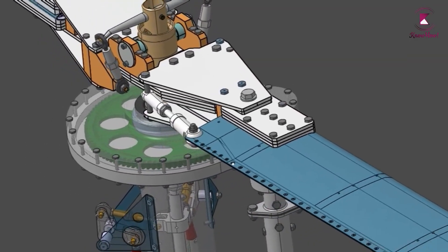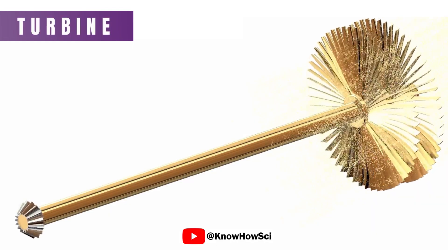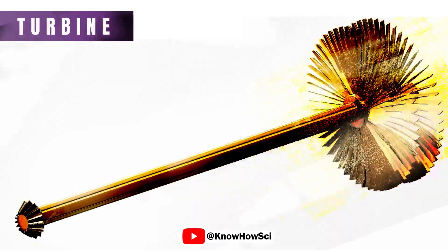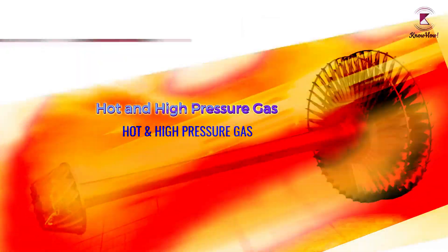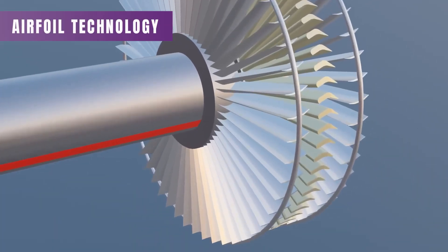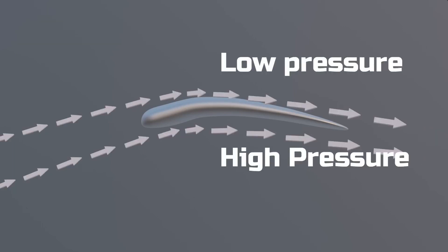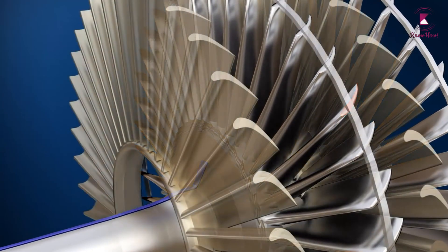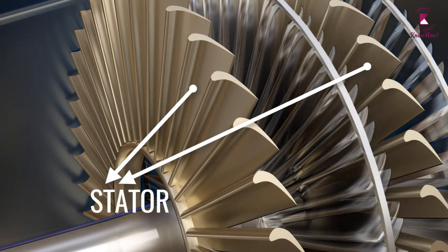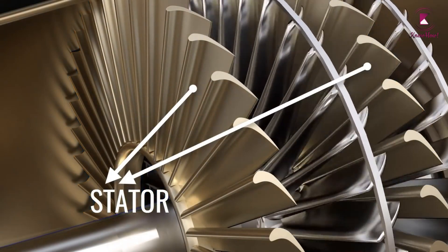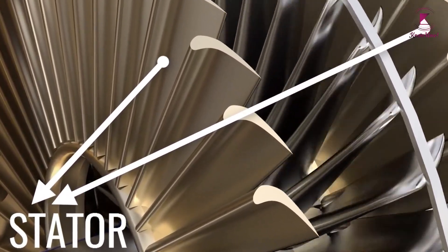The power shaft which turns the rotor receives power from a set of turbines. The turbine absorbs energy from hot and high-pressure gas flowing over the blades. Airfoil technology enables the turbine blades to turn; in order to properly guide the flow, a set of stator blades is used. These are fixed to the engine cover. The stator blades also ensure that sufficient flow velocity is maintained at the turbine rotor inlet.